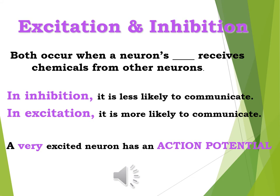Now let's talk about excitation and inhibition. Both occur when the neuron's dendrites receive chemicals from other neurons. These chemicals can have one of only two effects: inhibition — those chemicals cause the neuron to be less likely to communicate — or excitation — those chemicals cause the neuron to get excited and be more likely to communicate. So inhibition means less likely; excitation means more likely.